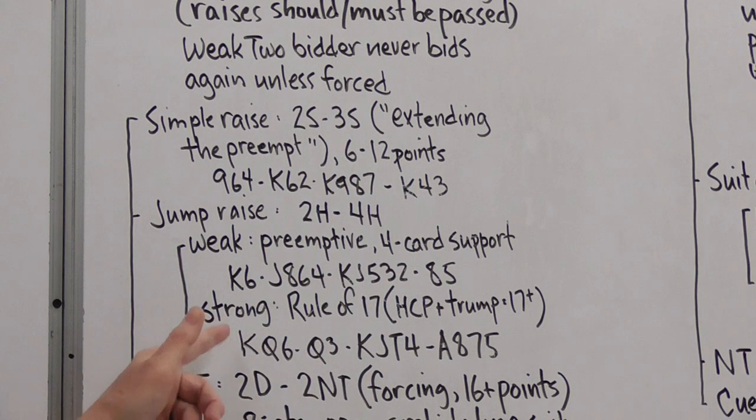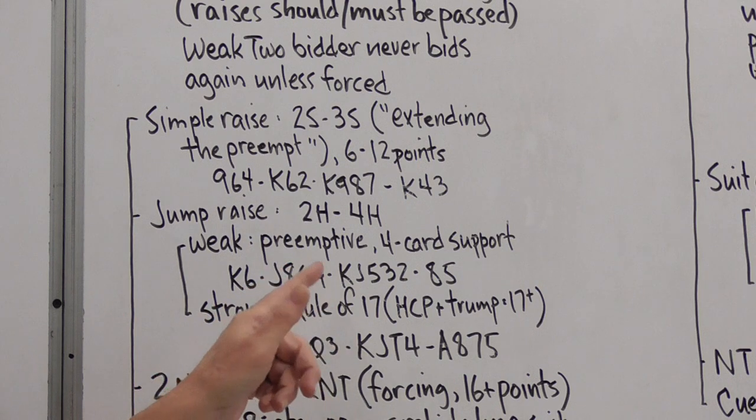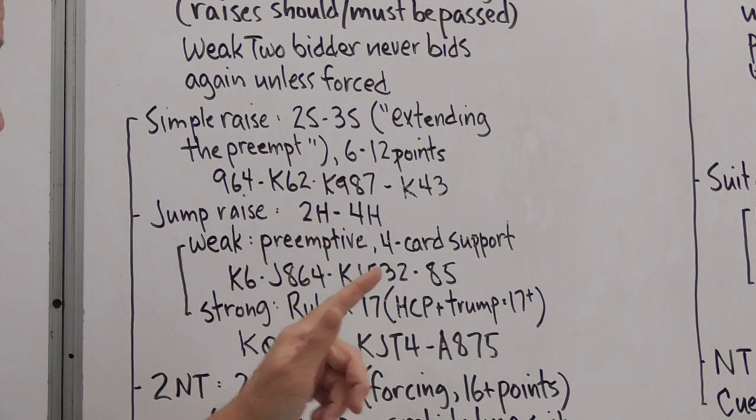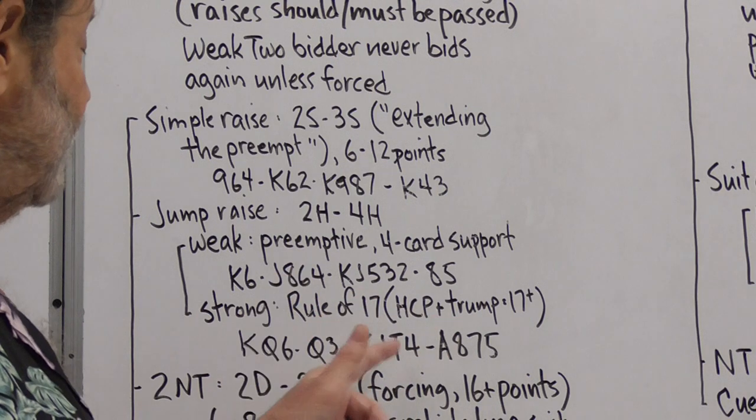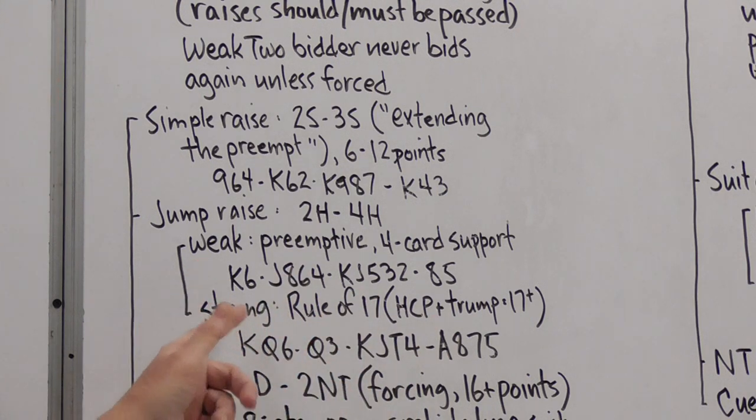They add up their high card points and the number of support of partner's long suit that they have. And if that total is seventeen or more, then they will raise to the four level, assuming we're talking about a major. So for example, in this hand we got fifteen high card points and two card support for partner's hearts. So fifteen plus two is seventeen, so the bidding might go two hearts, four hearts.